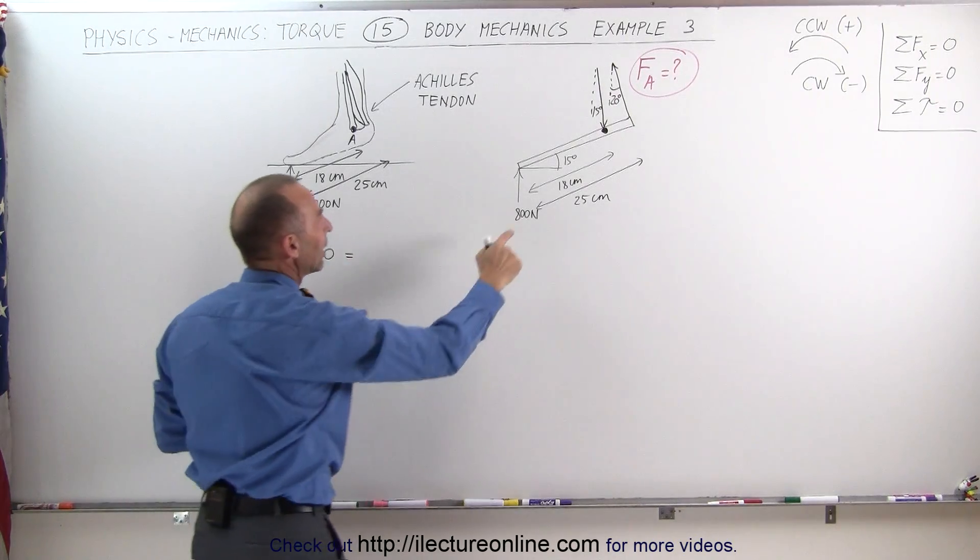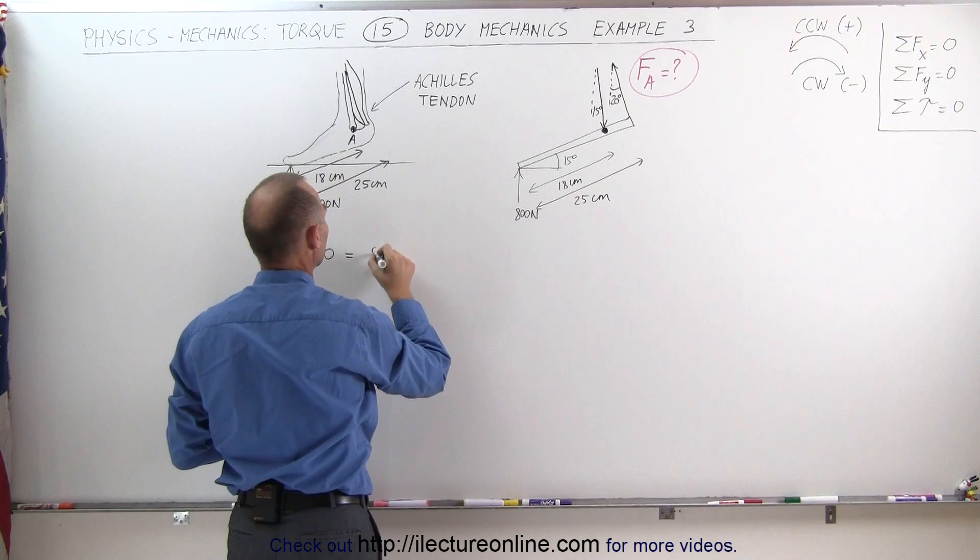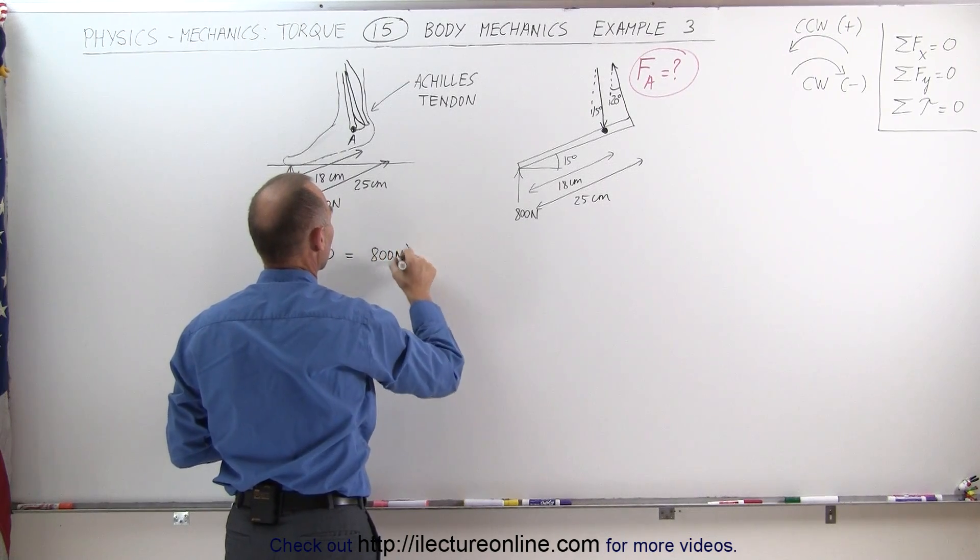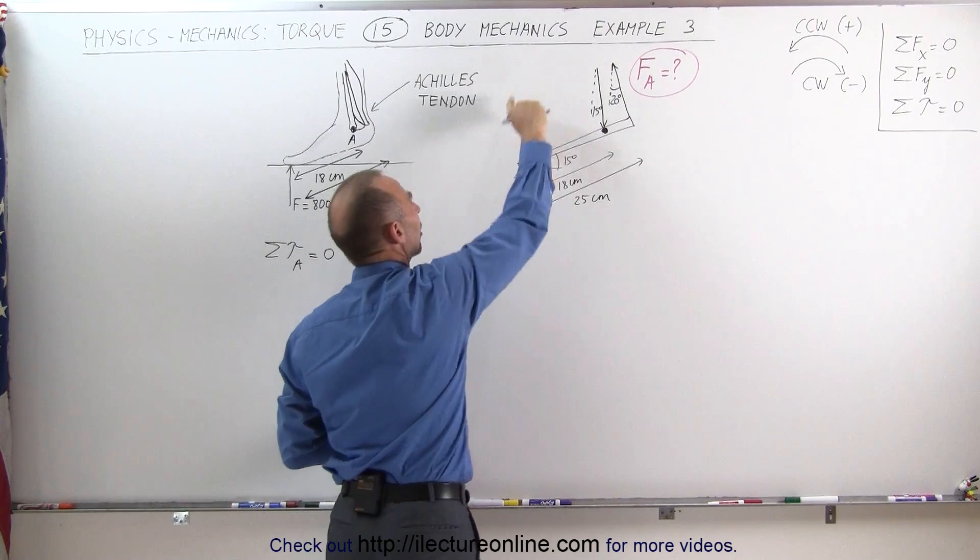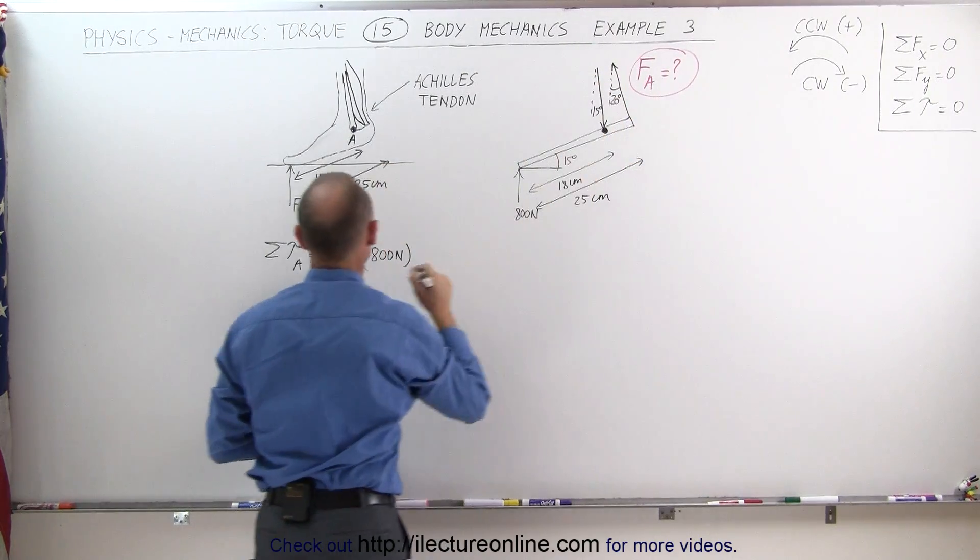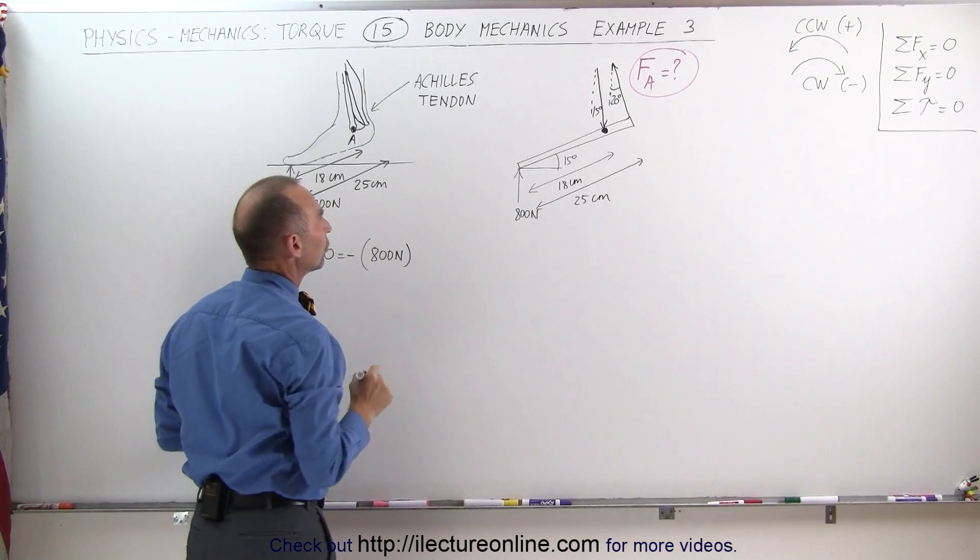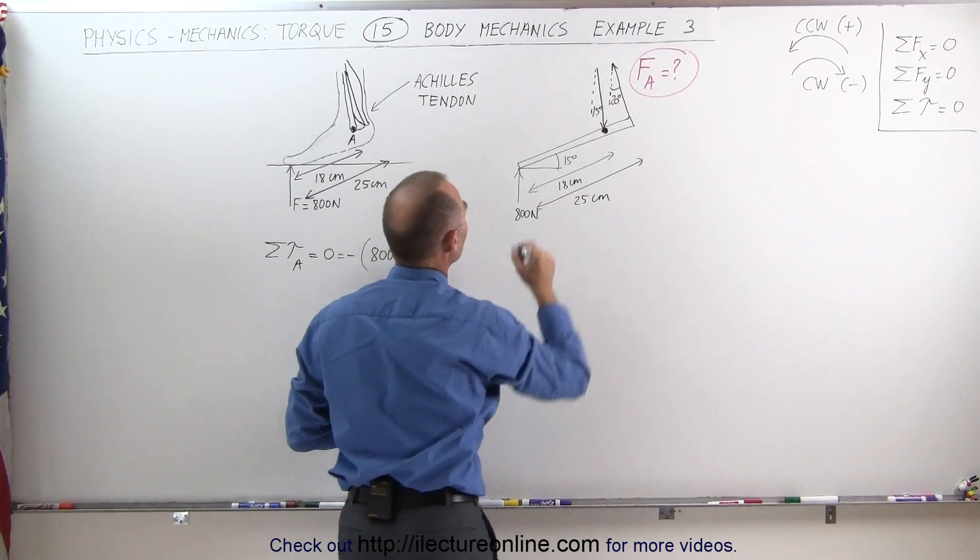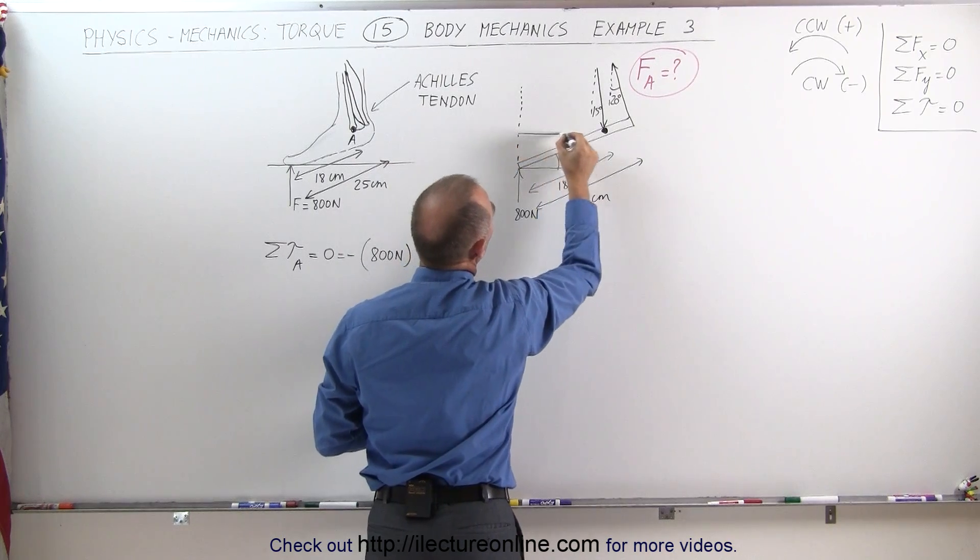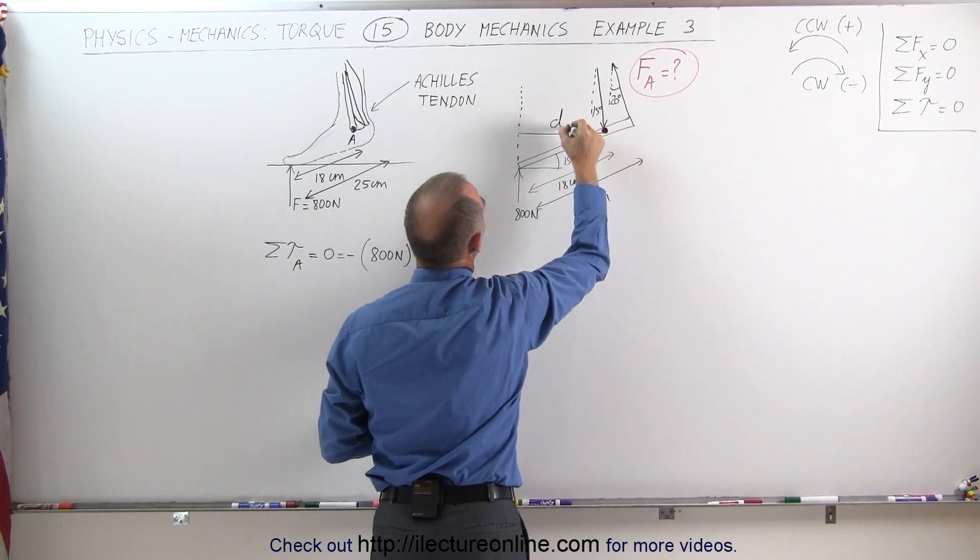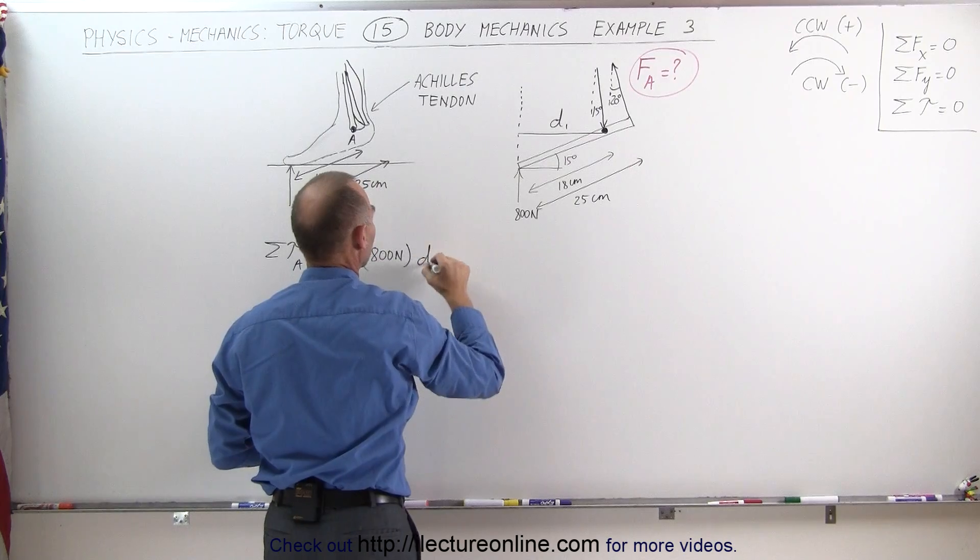When we add them all up starting with the 800 Newton force, so we have an 800 Newton force pushing against the foot like this which causes a clockwise direction that must be a minus torque, so that's minus 800 newtons, times the perpendicular distance from the line of action of the force to the pivot point which is distance, let's call it distance from right there, we'll call that distance one.